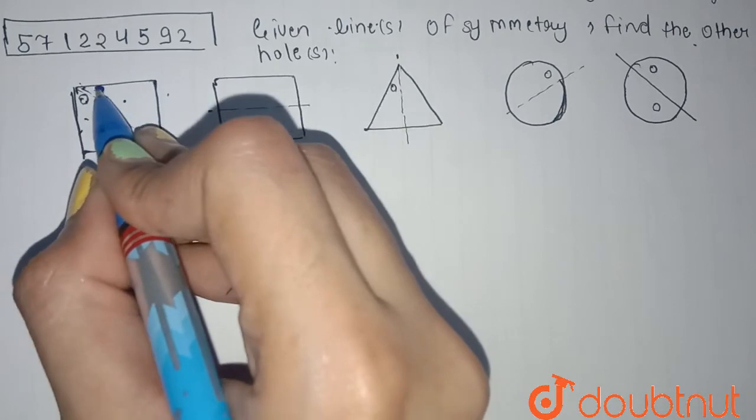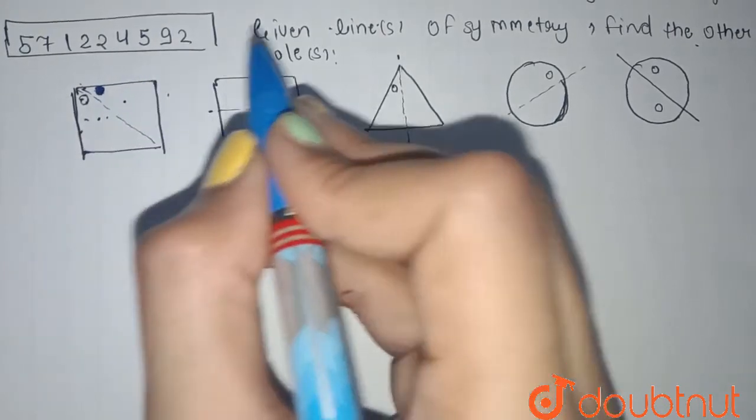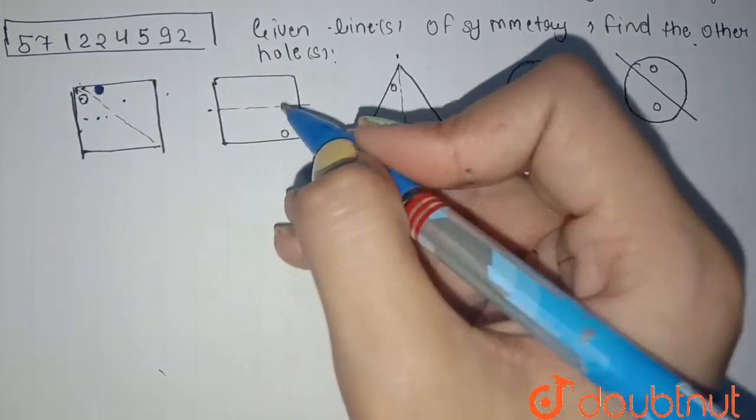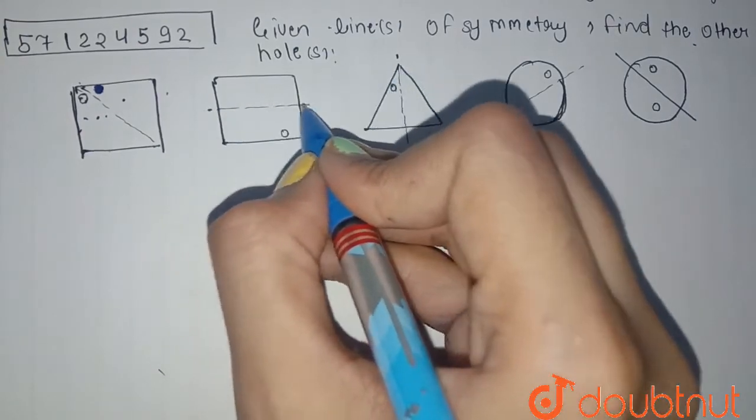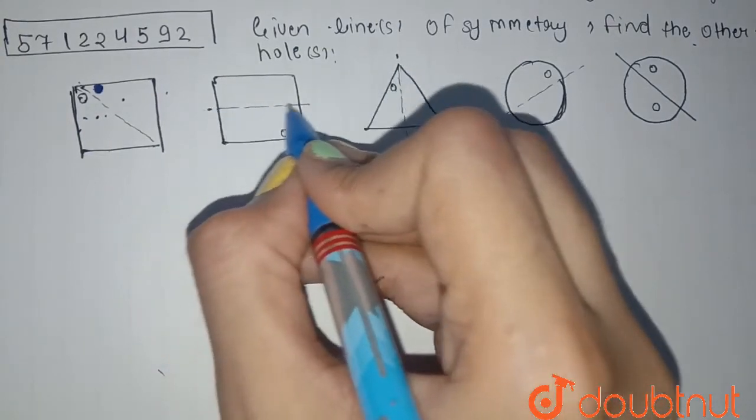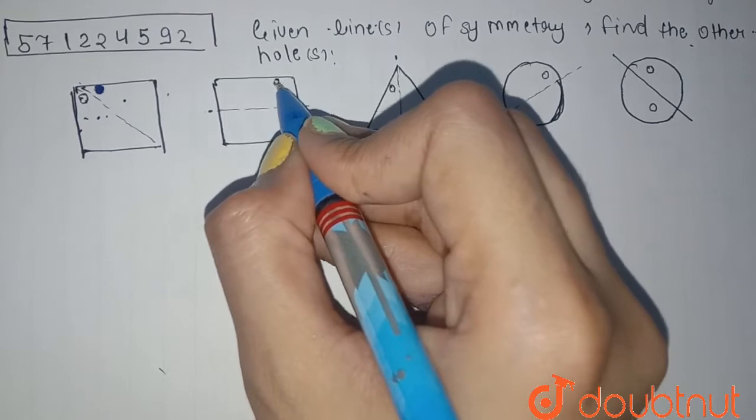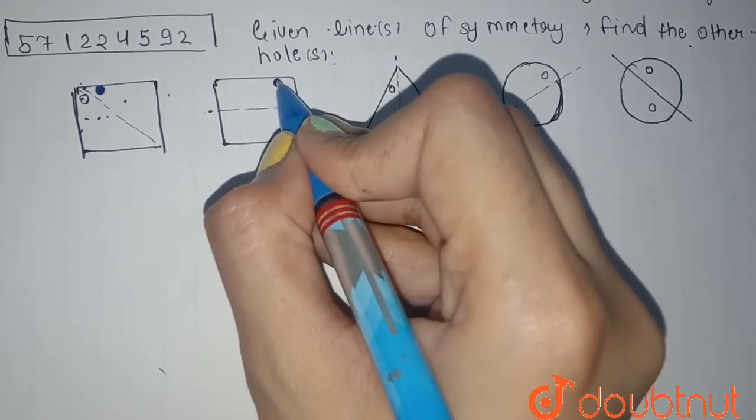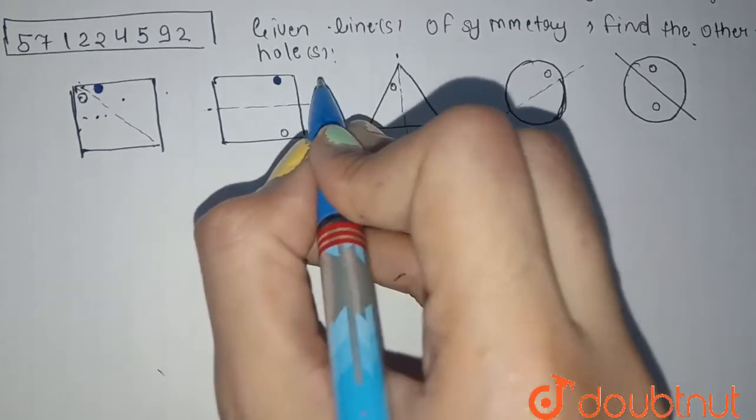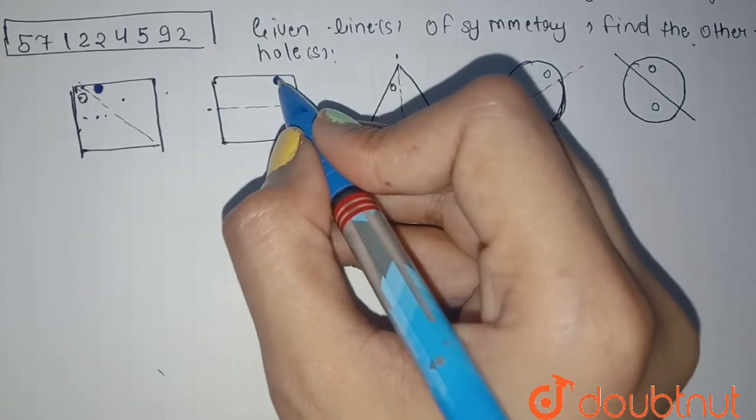you will get this image. So that is why this hole should be here. On the third one, you will see that this is the mirror line, right? So you will have the hole